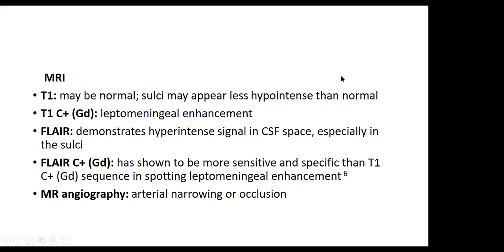On MRI, T1 may be normal; sulci may appear less hypodense than normal. T1 with contrast shows leptomeningeal enhancement. FLAIR demonstrates hyperintense signal in CSF spaces, especially in the sulci. FLAIR with contrast has been shown to be more sensitive and specific than T1 contrast sequences in spotting leptomeningeal enhancement. MR angiography may show vessel narrowing or occlusion due to arteritis or vasospasm.